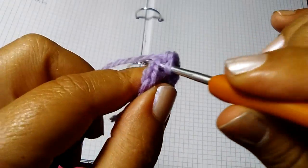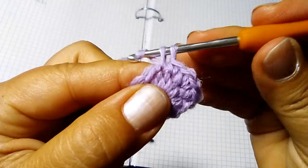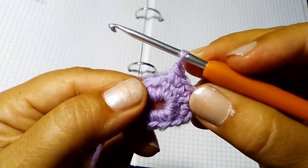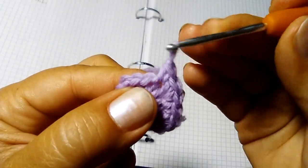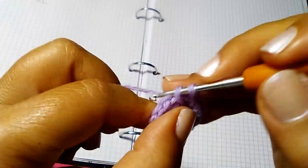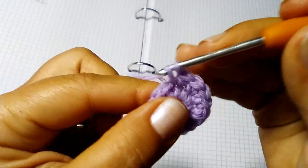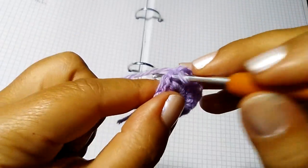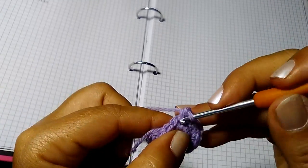Adesso nella maglia seguente faccio 1 e 2 maglie basse nella stessa maglia. In quella dopo solo una, in quella dopo due, una e due. Ripeto per tutto il giro. Alla fine di questo giro avrò in totale 18 maglie basse.